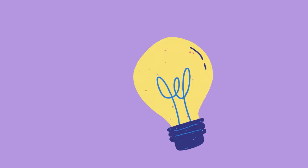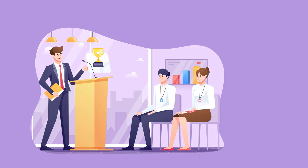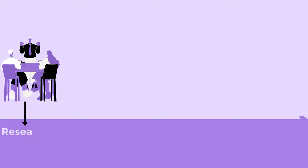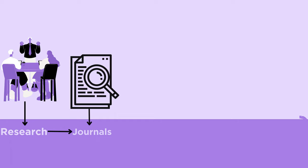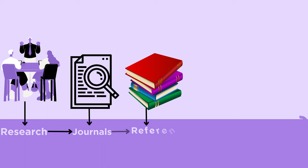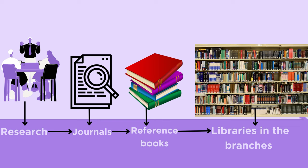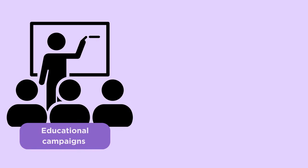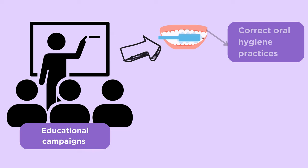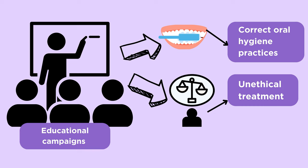To achieve the previously discussed objectives and strengthen the association, several programs and measures have been adopted. The association encourages its members in conducting research with grants from the association's funds, alongside encouraging them to publish papers in journals. The association also encourages opening of libraries in the branches and buying books out of their funds. Several educational campaigns have been launched to educate the Indian population about correct oral hygiene practices, and also to educate the public against unethical treatment provided by unqualified practitioners.